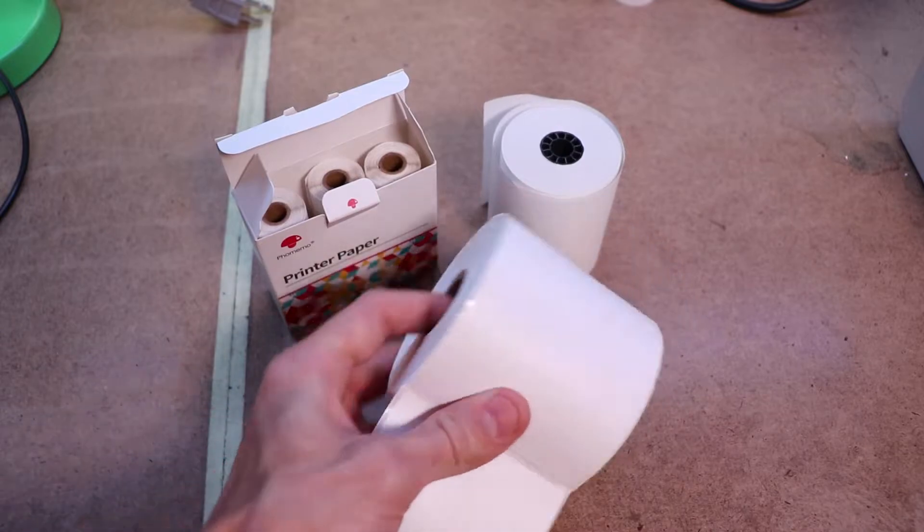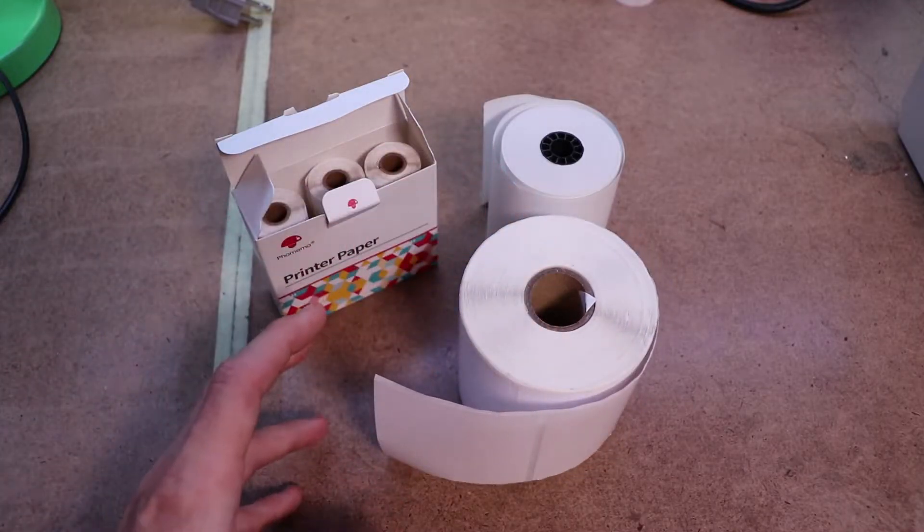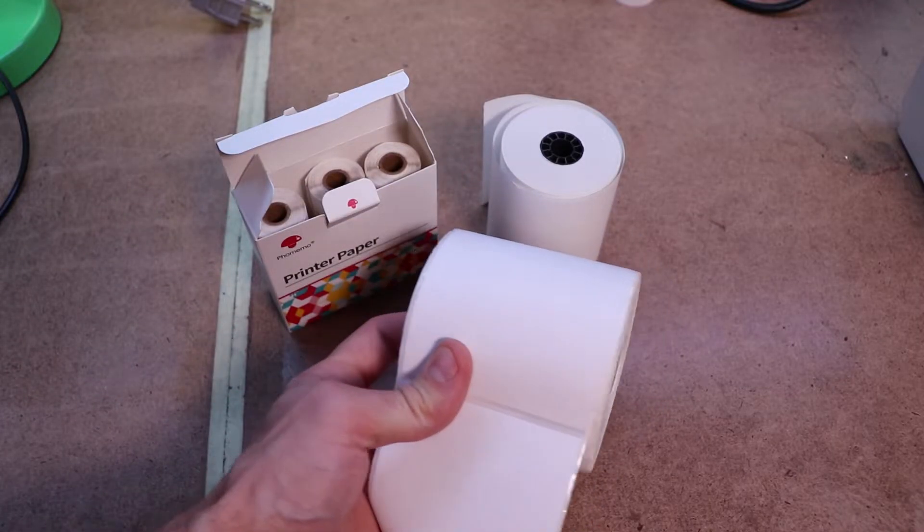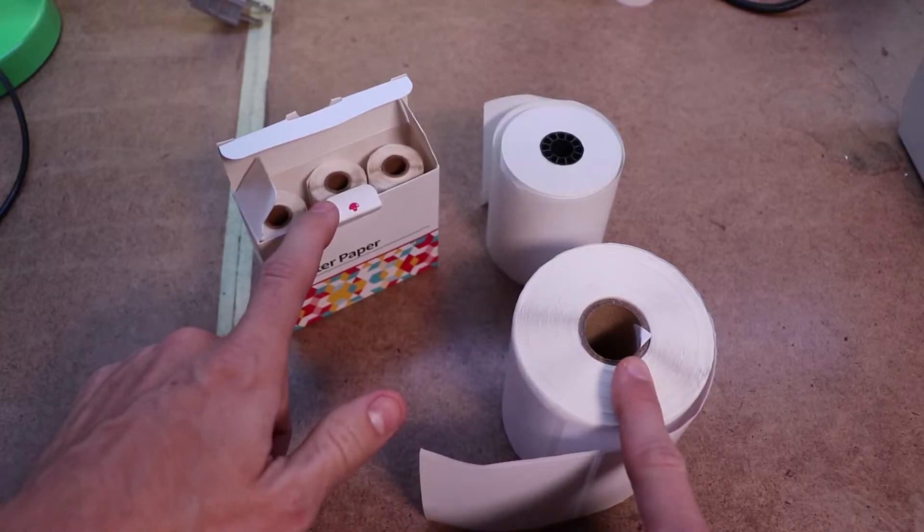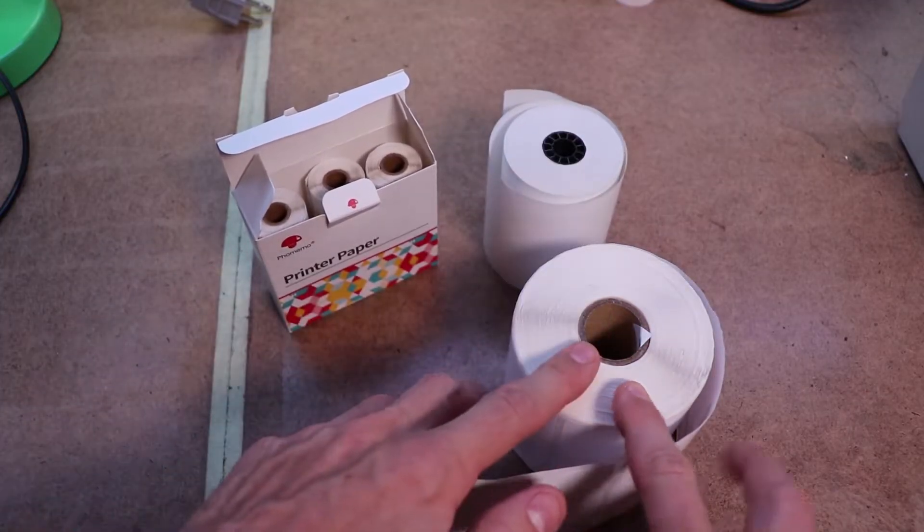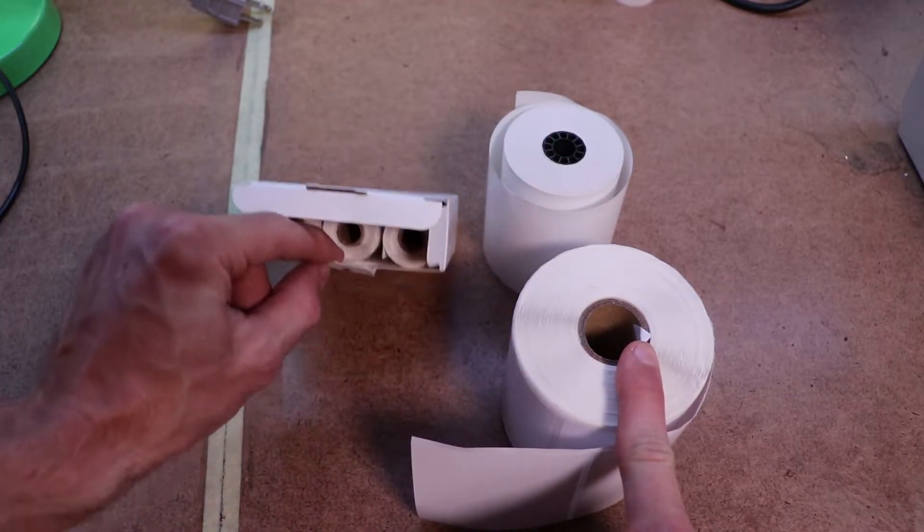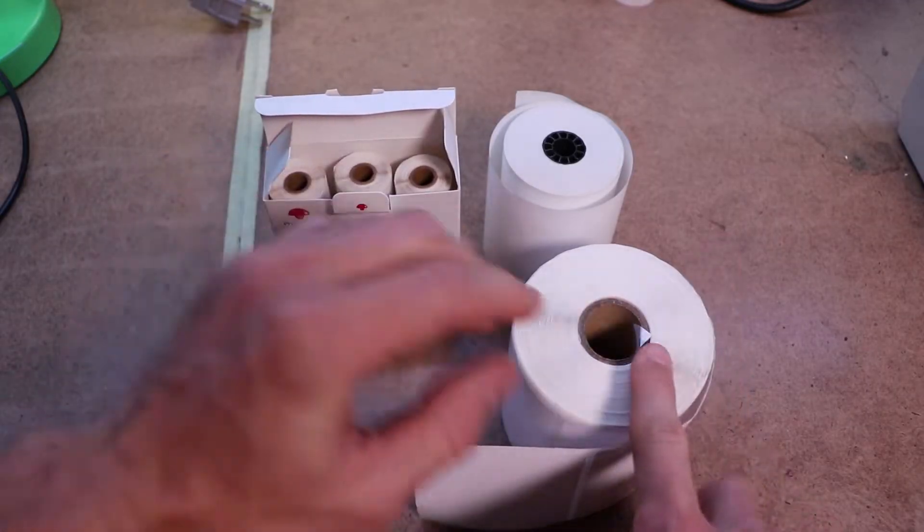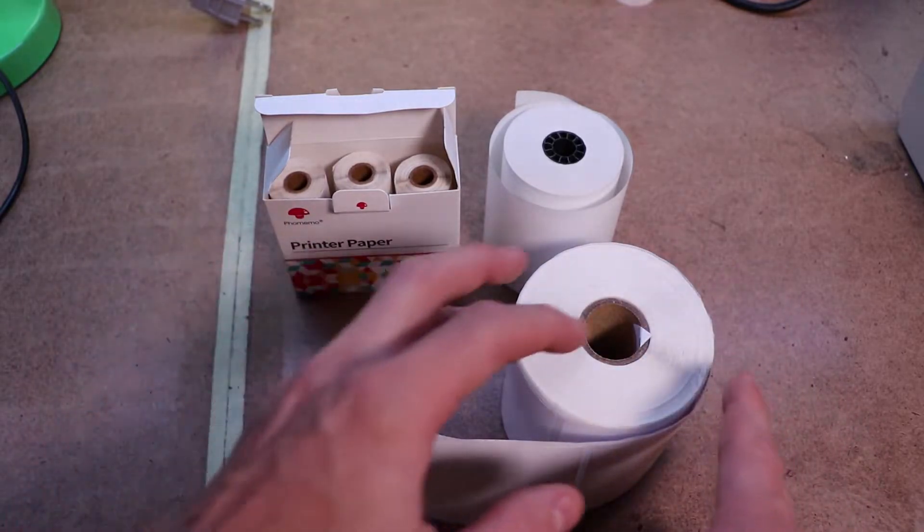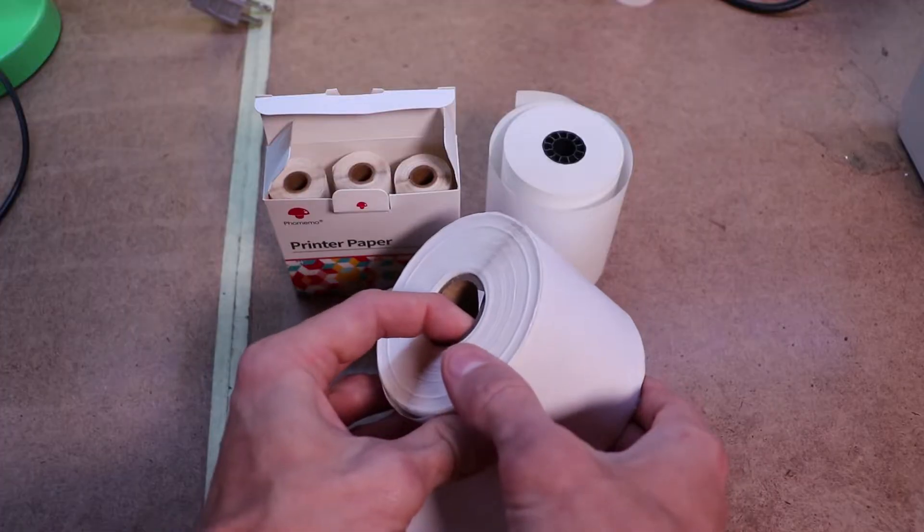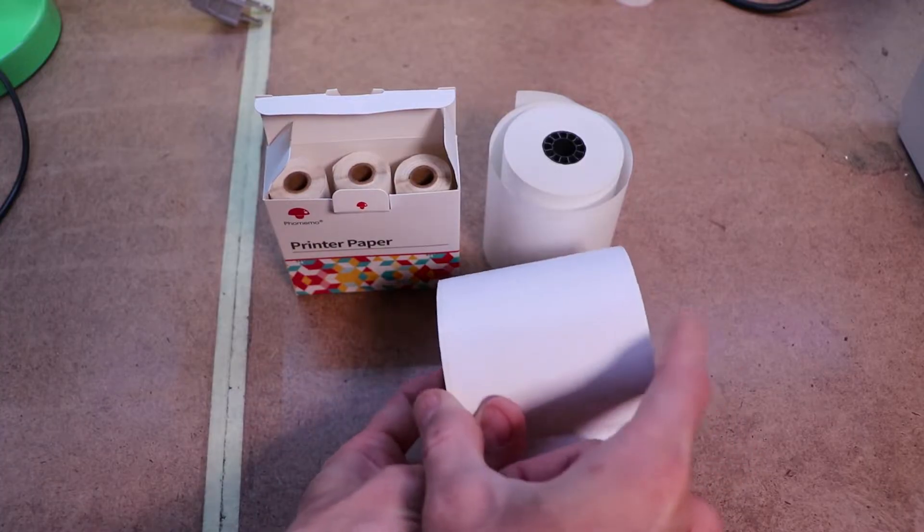So when it comes to the width and the size of the thermal paper that you're using, my printer can support a maximum of an 80 millimeter width on the thermal paper. So all of these are about 80 millimeters in width. They vary slightly, like this one is 79 millimeters. This one is 80.5 millimeters. So they vary slightly, but they should be all around 80 millimeters for my printer. Your printer may be different.